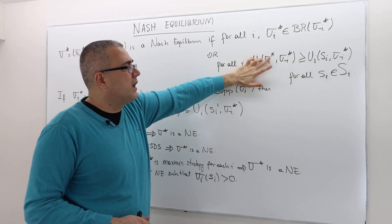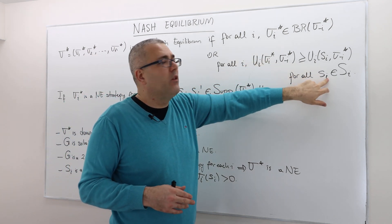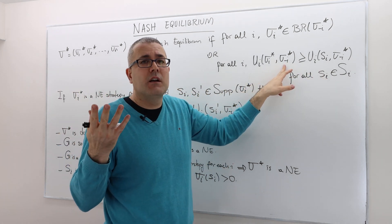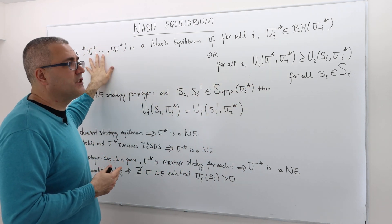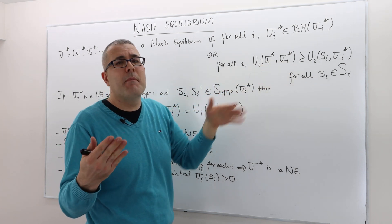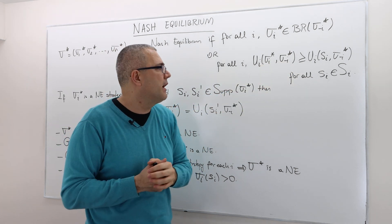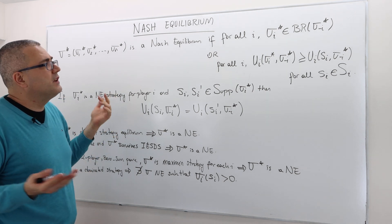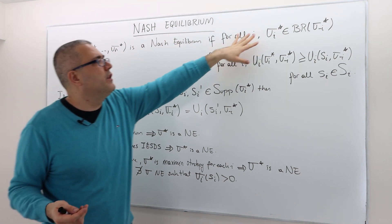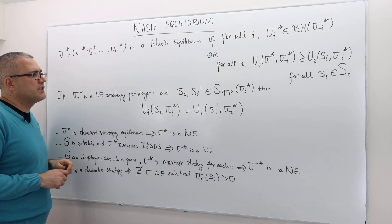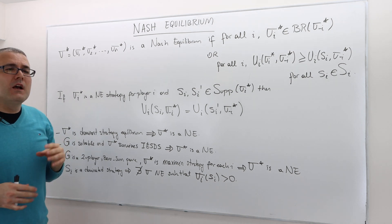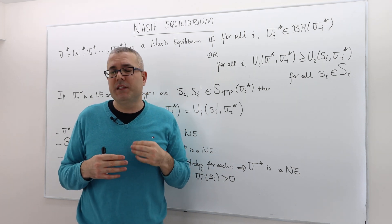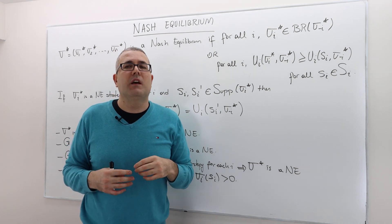Be careful: sigma i star may not be better than all other strategies if your opponents play something totally different than sigma minus i star. In this strategy profile, once I fix my opponent's strategy, the question is: am I best responding to my opponents or not? This is a mixed strategy Nash equilibrium. The pure strategy Nash equilibrium is exactly the same definition but using pure strategies. There is nothing special about it. At first it may seem complicated, but it is actually quite intuitive — it is a stability concept.